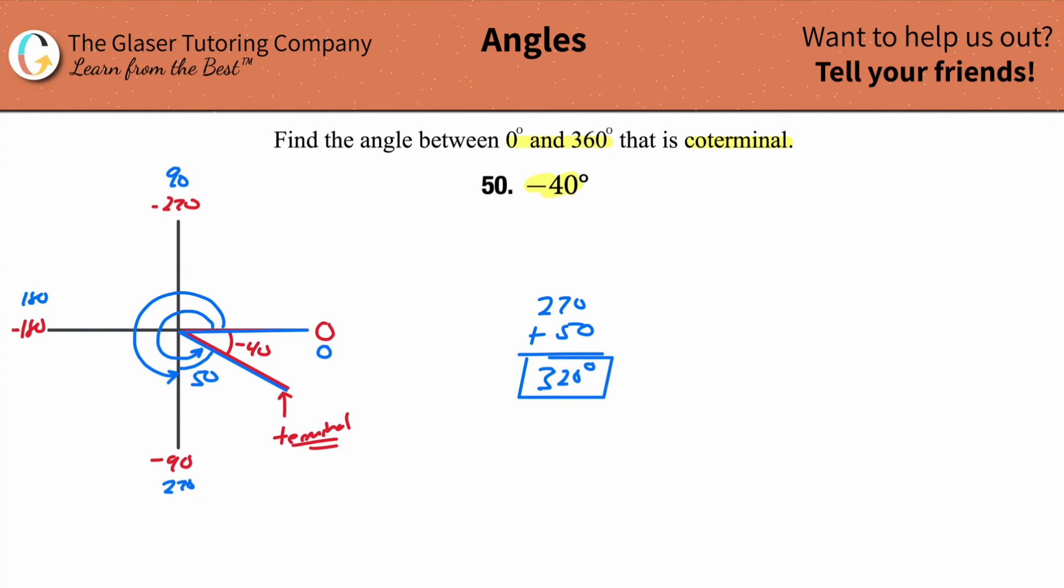What you can also do is you can also basically take 360 in this case and subtract out the 40 from it. And that would have gotten you to the same place, 320. That's the coterminal angle.